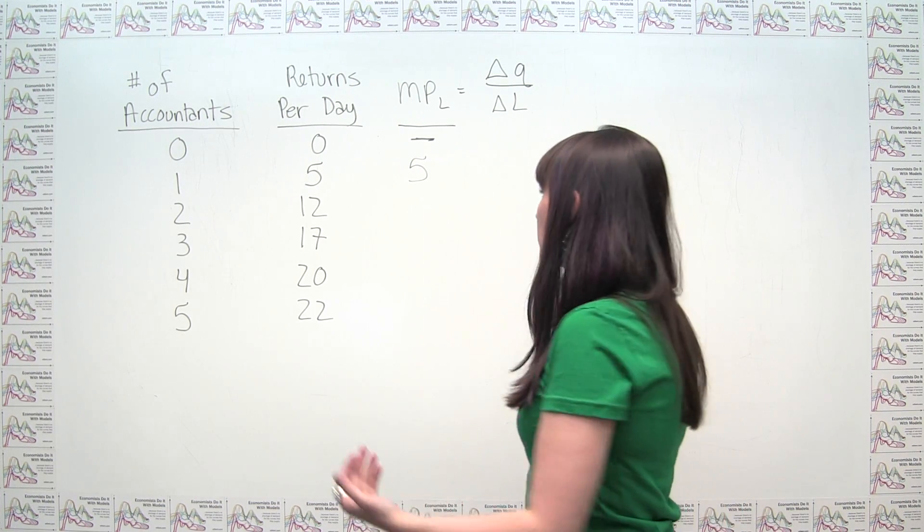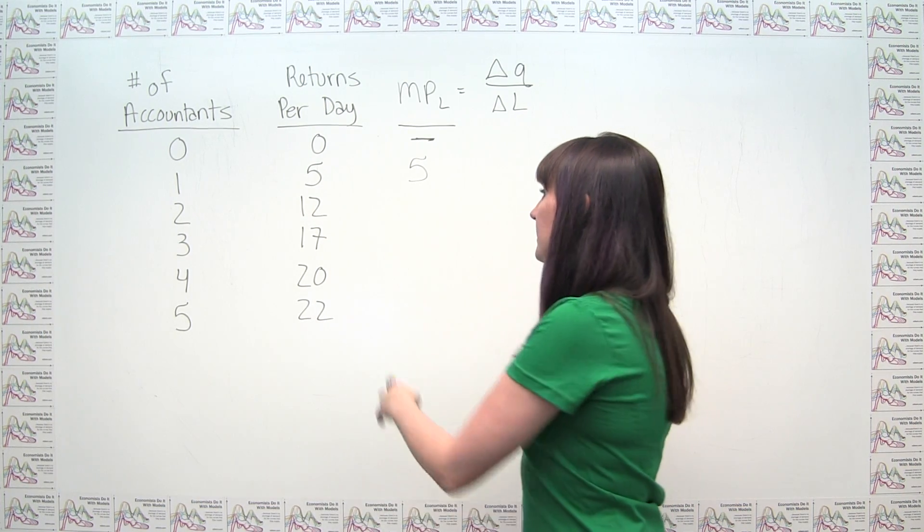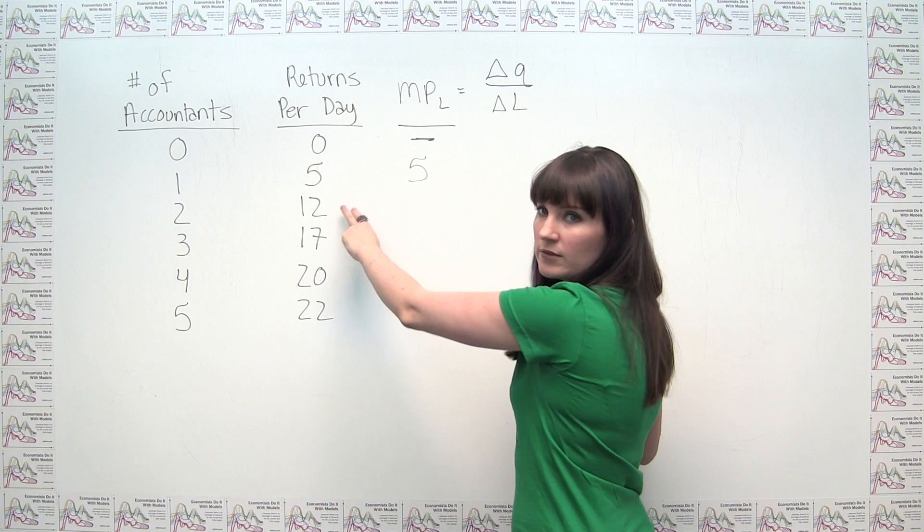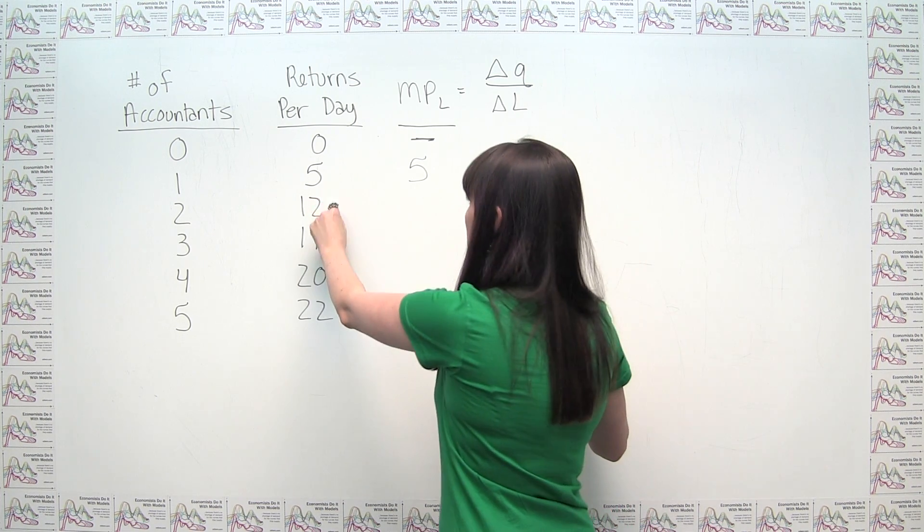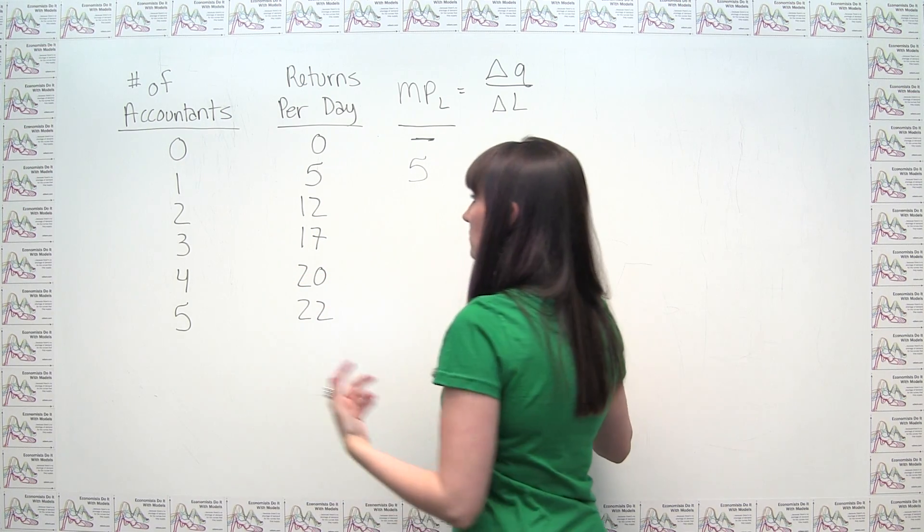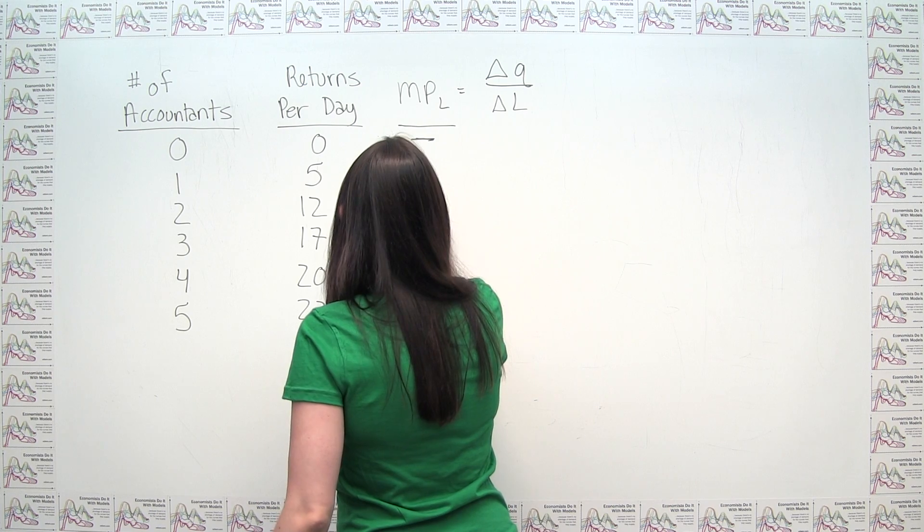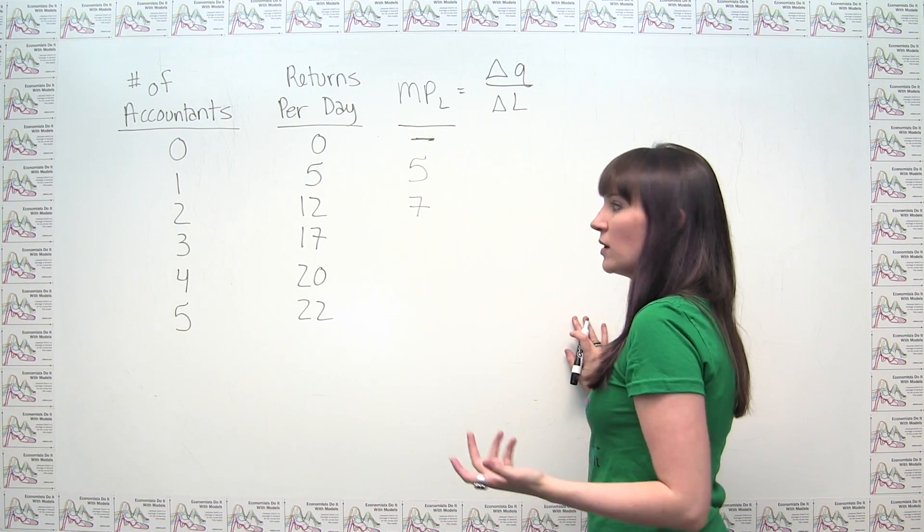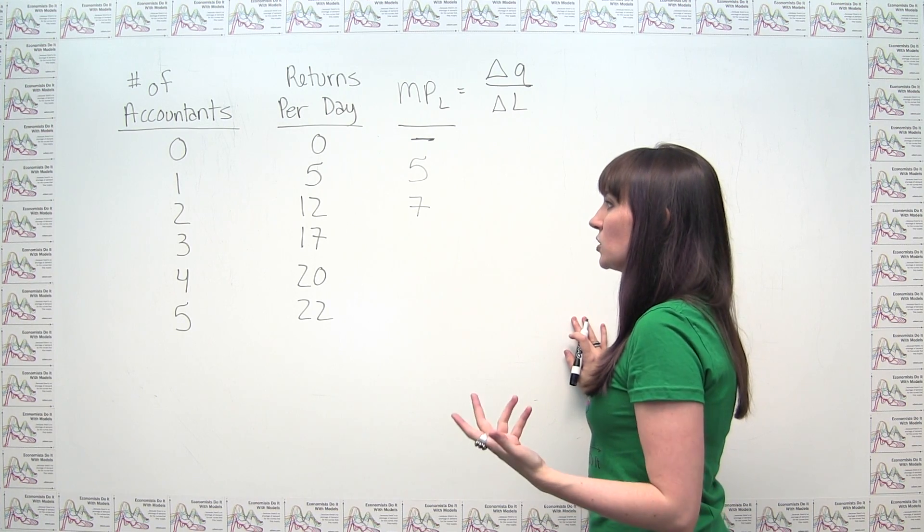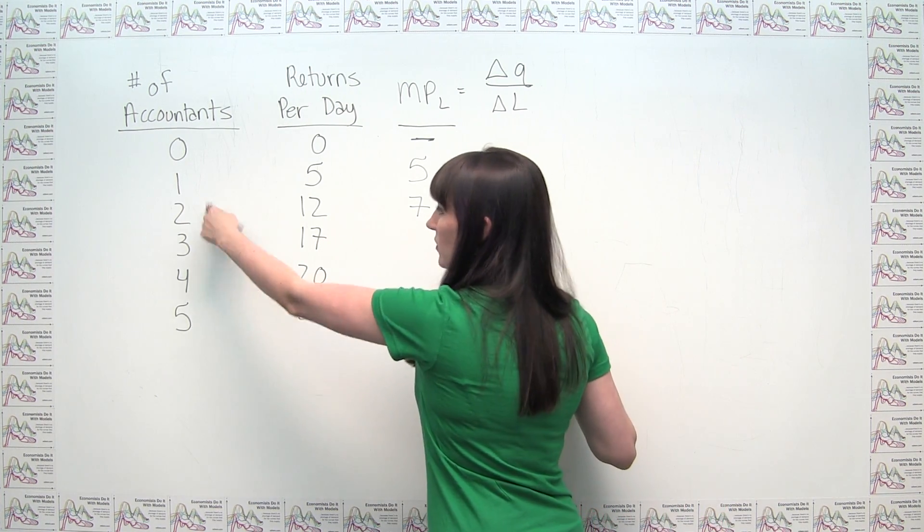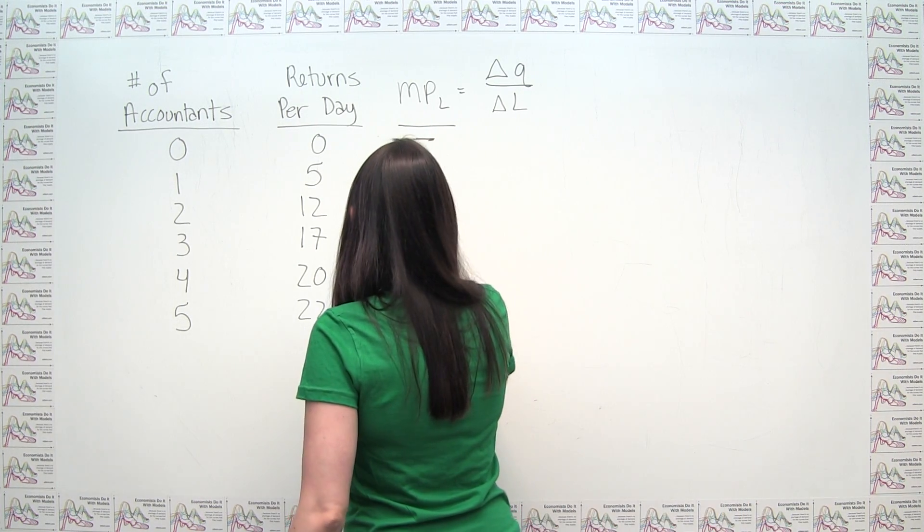Similarly, we can keep doing that. The marginal product of this second accountant—this second accountant brings us from an output level of five to an output level of twelve. So his marginal product is twelve minus five, divided by two minus one, or just seven divided by one, or seven. This third accountant brings us from twelve to seventeen tax returns per day. So his marginal product is seventeen minus twelve, divided by three minus two, or just five divided by one, or five.